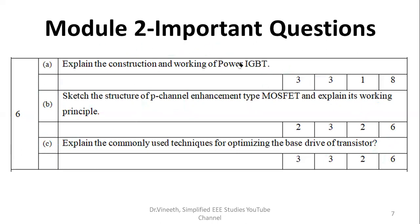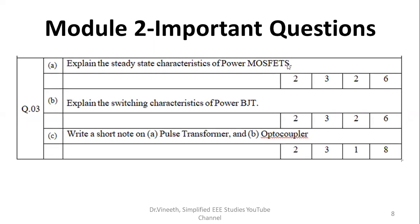Explain the steady state characteristics of power MOSFET, which has the weightage of six marks. Three marks for the graph, another three marks for the explanation. Explain the switching characteristics of power BJT. Clear switching. You are expected to totally clear switching diagram. Four diagrams will be there that you have to mention carefully.